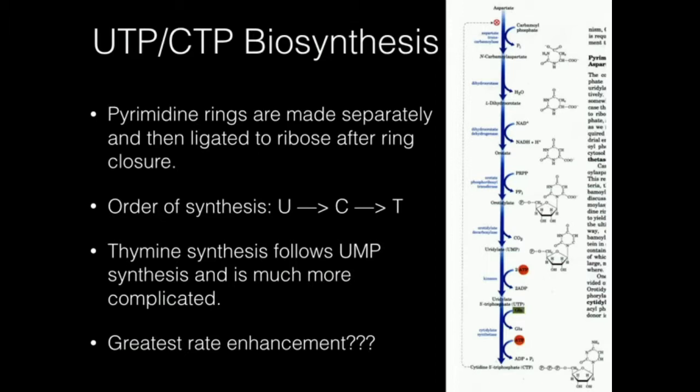Now I'm going to mention this enzyme orotidylate decarboxylase, because it's a really interesting enzyme. I'm actually going to have a mechanism of this enzyme in the next video because I think it's very impressive. Orotidylate is going to be decarboxylated at this carboxyl group by orotidylate decarboxylase to make uridylate — and now we have UMP.